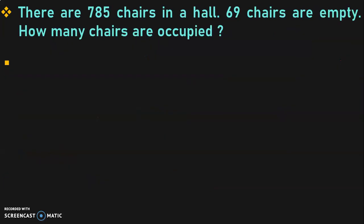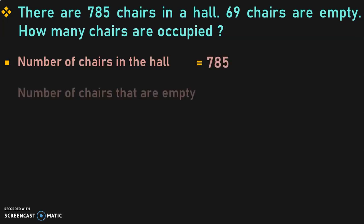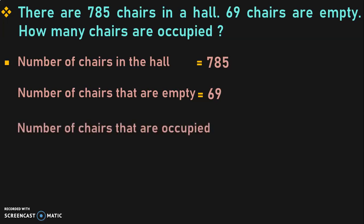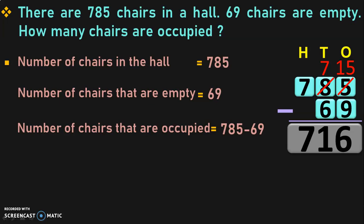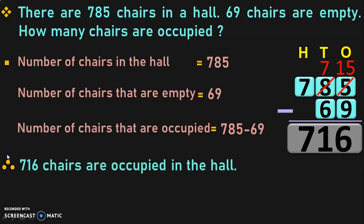The next question: There are 785 chairs in a hall. 69 chairs are empty. How many chairs are occupied? Here we do not have a direct keyword to indicate subtraction, but when you understand the concept of the sum, you can see clearly it is a subtraction operation — we have 785 chairs total of which 69 are empty, so we subtract 785 minus 69. It is very important for children to comprehend the sum even when there is no direct keyword. 785 minus 69 gives you 716. Therefore, 716 chairs are occupied in the hall.